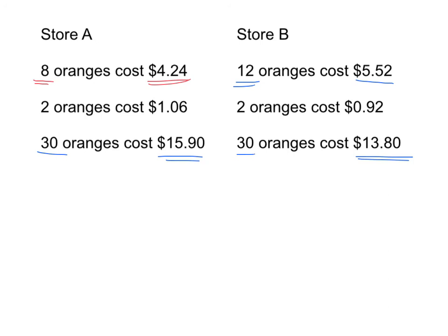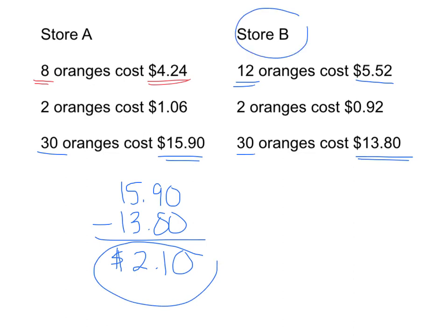The question said, how much less are we going to pay? Store A costs $15.90. Store B is $13.80. How much cheaper is it? We're going to subtract to find out. $15.90 minus $13.80 is $2.10. So we know that we're saving $2.10 by shopping at store B.